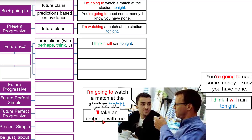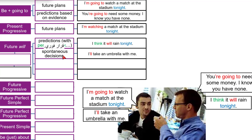"I'll take an umbrella with me." This is a decision, but when did he make it? Just now — on the spot. He didn't think about it yesterday or the day before. He made a spontaneous decision right now: he decided to take an umbrella in case it rained. Use 'will' for on-the-spot decisions.